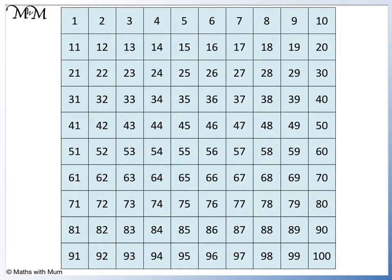We'll now look at the 16 multiples of 6 between 1 and 100 on the number grid. We can start by highlighting the numbers in the 6 times table up to 12 times 6.